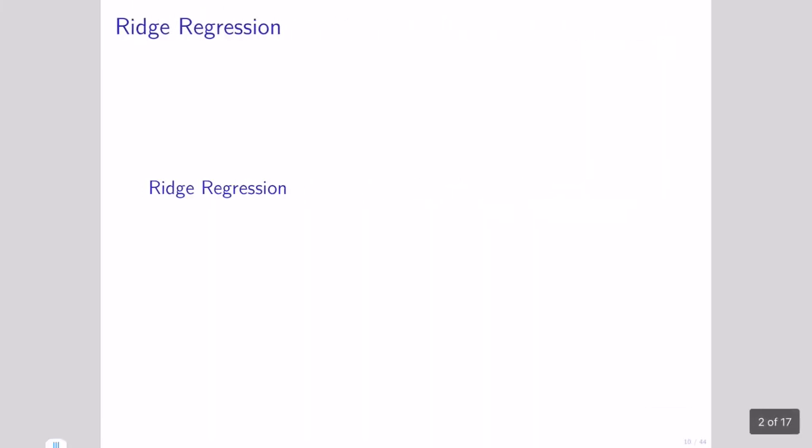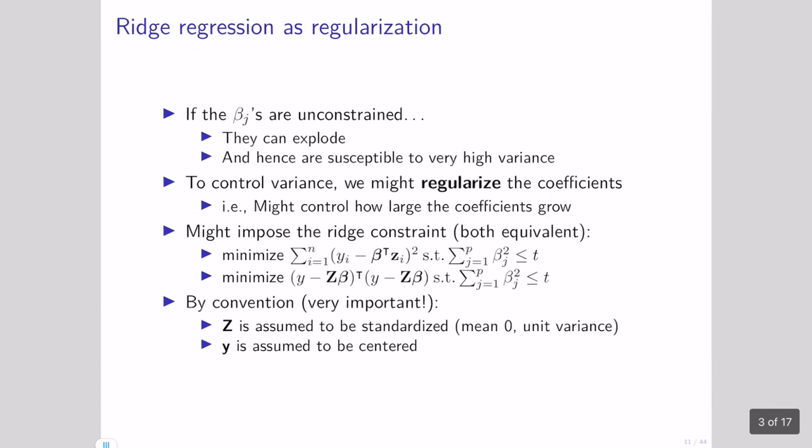Today we're going to talk about one form of bias that we can introduce. Bias can be anything, but there's a specific set of types of bias that are commonly used because they have really nice properties. The bias we're going to talk about today is ridge regression, and this corresponds to some particular assumptions we're going to make about the model we want to build.